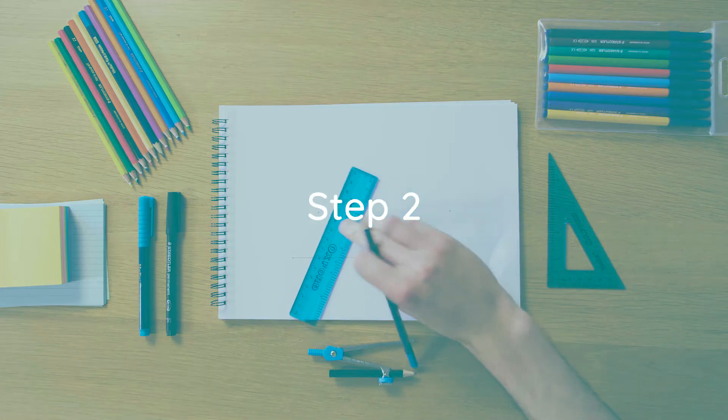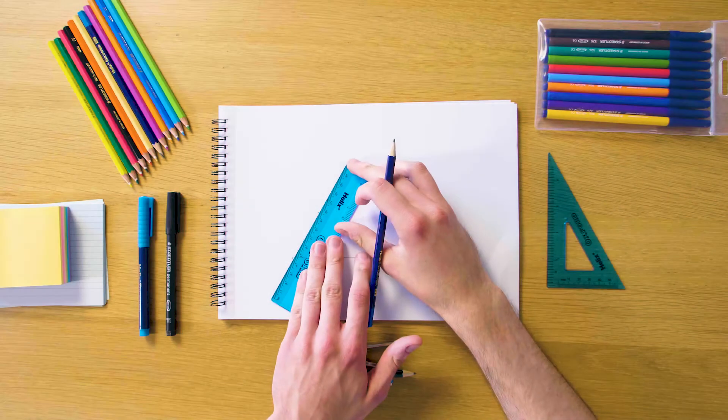The next step now is just to get our ruler again and draw two construction lines through these dots that we've created using our protractor.